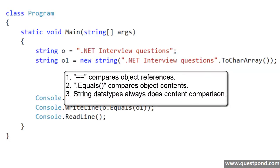There are three important points to take away from this video. First, the equal to equal to sign helps us to do object reference comparison. The .equals method helps us to do content comparison. And if we are using a String data type, it always does a content comparison. I hope you have enjoyed this video — we were trying to understand what is the difference between equal to equal to comparison and the .equals method comparison. Thank you so much.